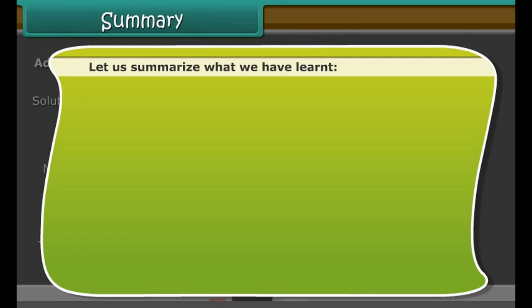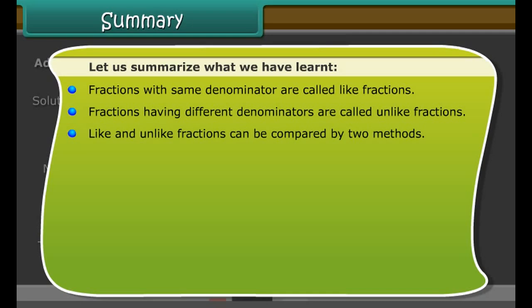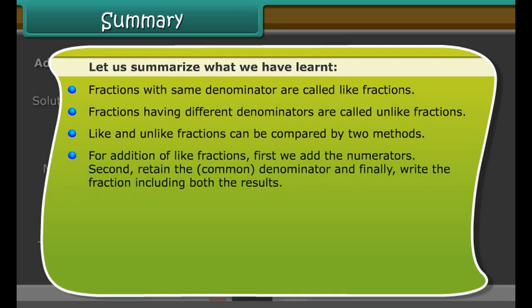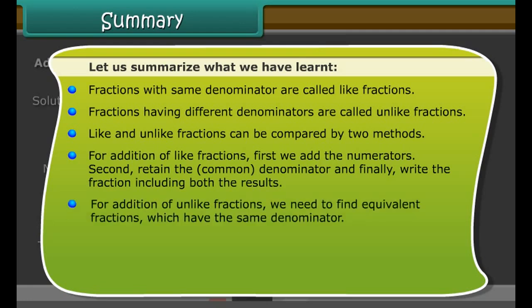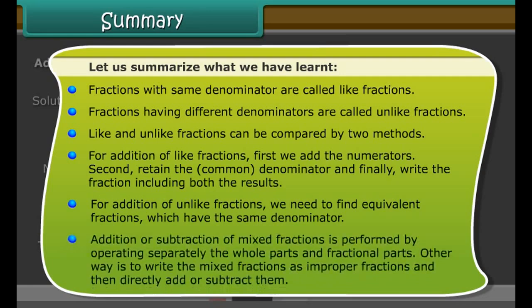Summary: Fractions with the same denominator are called like fractions. Fractions having different denominators are called unlike fractions. Like and unlike fractions can be compared by two methods. For addition of like fractions, first add the numerators, secondly retain the common denominator, and finally write the fraction including both results. For addition of unlike fractions, we need to find equivalent fractions which have the same denominator. Addition or subtraction of mixed fractions is performed by operating separately on the whole parts and fractional parts, or by writing the mixed fractions as improper fractions and then directly adding or subtracting them.